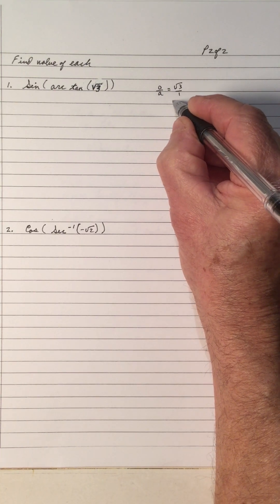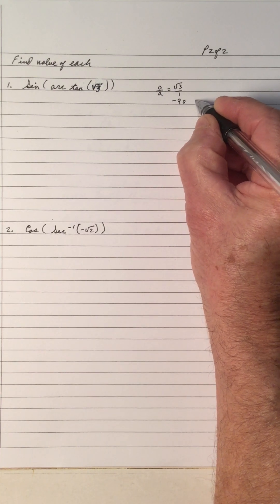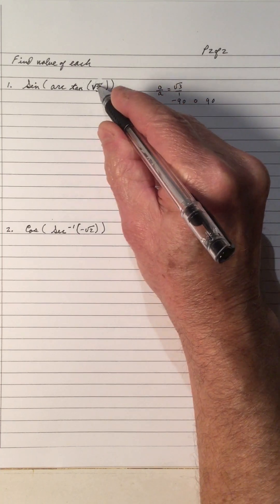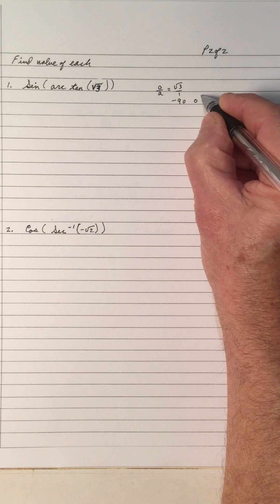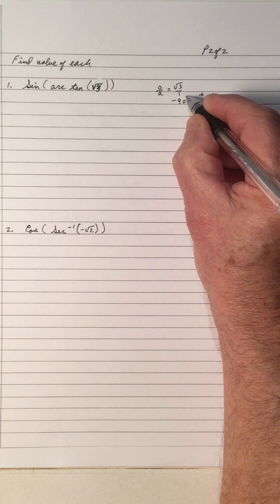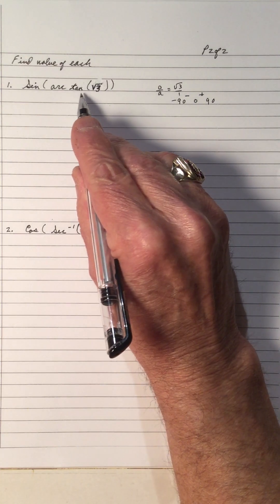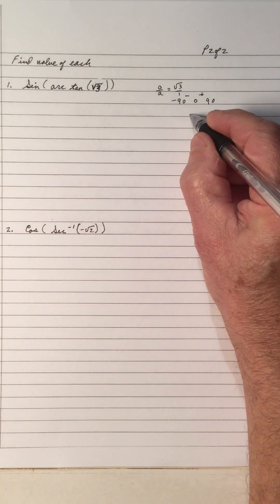And let's see, tan is between negative 90, 0, and 90. So since the number is positive, that means it's positive between 0 and 90, negative between negative 90 and 0. So that means that this tan must be in the first quadrant.